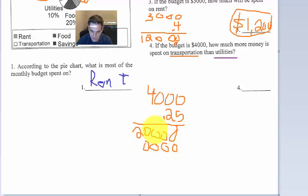Then 2 times 0, 2 times 0, 2 times 0, 4 times 2 is 8. So we got 10, 1, 2, 3, 4, 2 decimals. So 1, 2, right there. So that's our transportation budget.